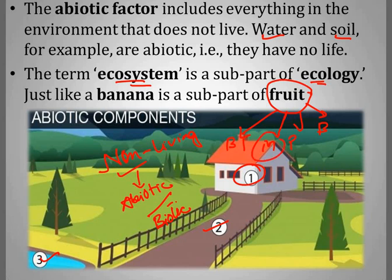Just as banana is one type of fruit, similarly in ecology, ecosystem is a part or sub-part in which we study biotic factors and abiotic factors.